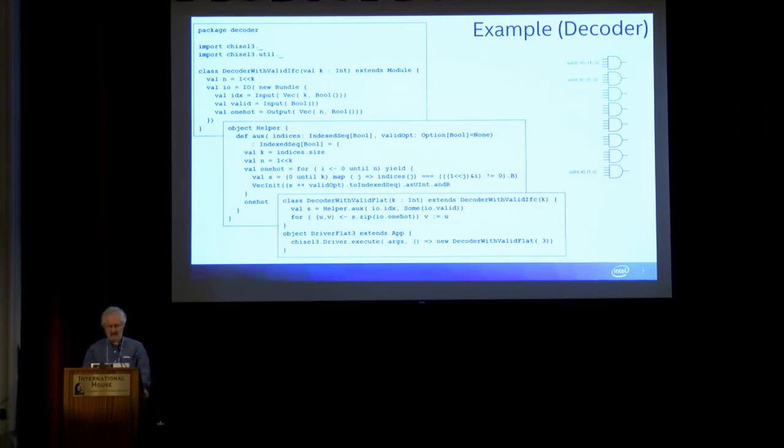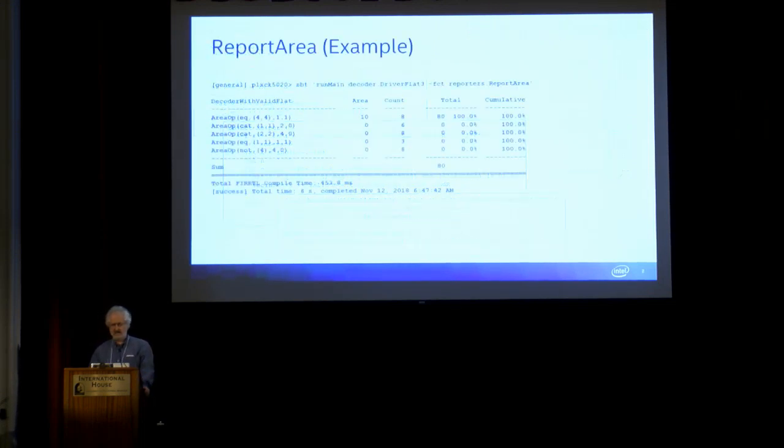If you want to run our area estimator, you run this command line: sbt run main, the name of the driver, and then you run the FIRRTL pass ReportArea. That will build up your circuit, then run the FIRRTL pass and print out some stuff on the screen. It's a FIRRTL transform, but it's actually not changing the circuit any—it just has the side effect of writing something onto the screen for you.